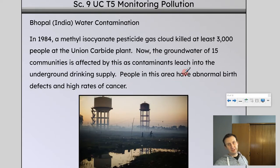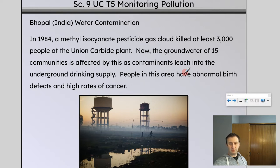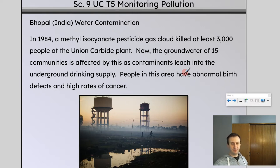So, do you think that particular plant would be a point source or a non-point source? Obviously it's a point source — we can tell exactly where the pollution is coming from. It's not like, 'where did that toxic pesticide gas come from?' — you know exactly: it's the pesticide plant. So it would be a point source.